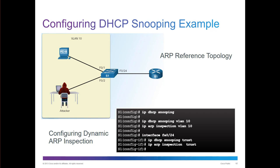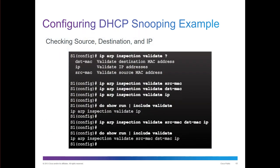To configure DAI, enable DHCP snooping first, then set the appropriate VLANs. Issue 'ip arp inspection vlan [vlan-id]' for ARP inspection. For trusted ports: 'ip dhcp snooping trust' for DHCP, and 'ip arp inspection trust' for ARP inspection. You can also do 'ip arp inspection validate' with options for IP, source MAC, or destination MAC — source MAC validates the source, destination validates the destination, and IP validates the entire IP regardless of source or destination.